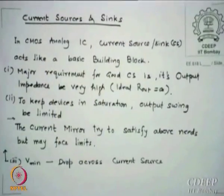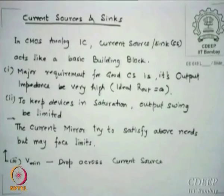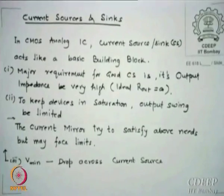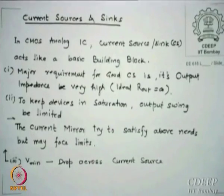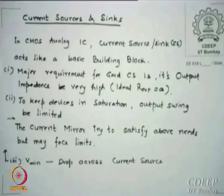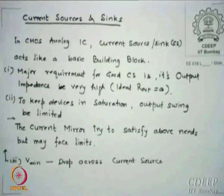We are at the topic of current sources and sinks. In a CMOS analog IC, a current source or sink acts like a basic building block, and there are 3 major requirements: the output impedance should be very high, all devices must be in saturation, and the mirror should satisfy a minimum voltage condition — the drop across the current source should be as small as possible.